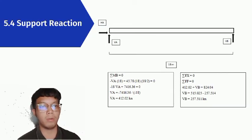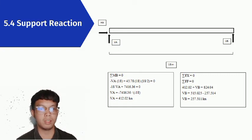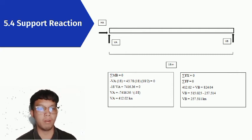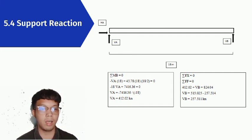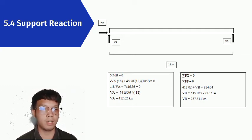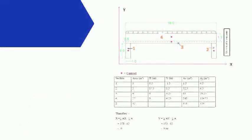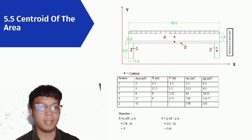For the support reactions: at point A, the pin support provides reactions from beneath and beside the beam, giving a support reaction of 412.02 kN. At point B, the roller support provides a reaction from beneath, giving 257.51 kN. The bridge cross-section has been divided into four composite shape parts for centroid calculation.